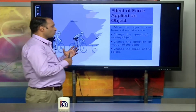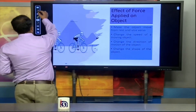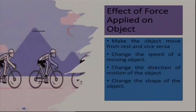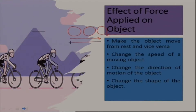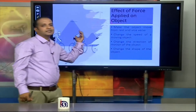Force can also change the direction of motion of an object. If an object is moving towards the right side and we apply a force from the right side, the object's position may shift to the left or upward direction, depending on the magnitude and direction of the applied force.